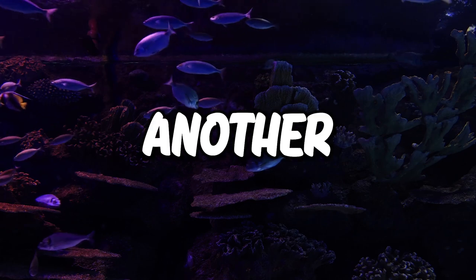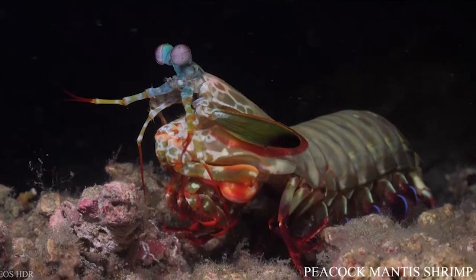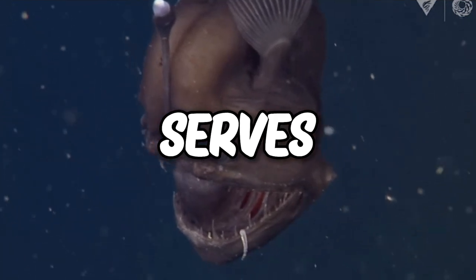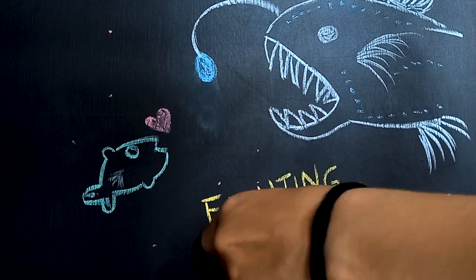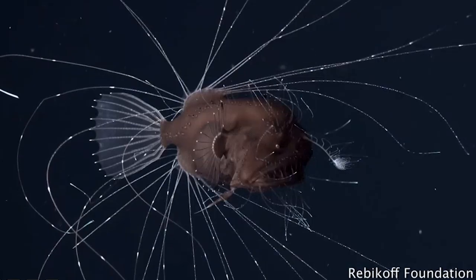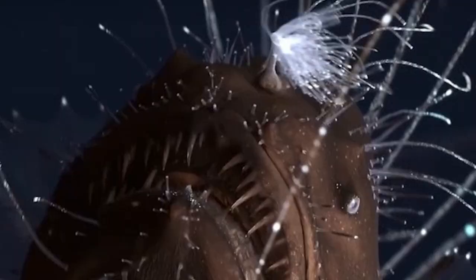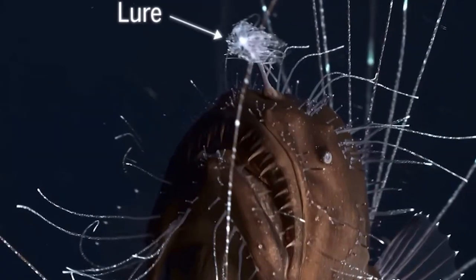In one way or another, it improves the living thing's chances of survival. Light emission serves a variety of purposes, like fighting or attracting prey. Fish such as the anglerfish use a light organ filled with bacteria that dangles from their forehead.